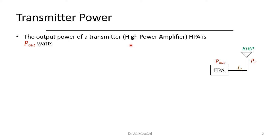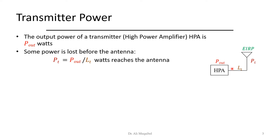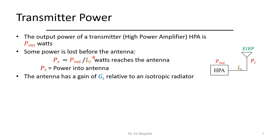So the output power from the high power amplifier is P_out in watts, and then some power will be lost before getting to the antenna. We can relate them whether you are using linear scale or dB scale. The relation is that P_T will be less than P_out. P_T is the power into the antenna and P_out is the power out of the high power amplifier.